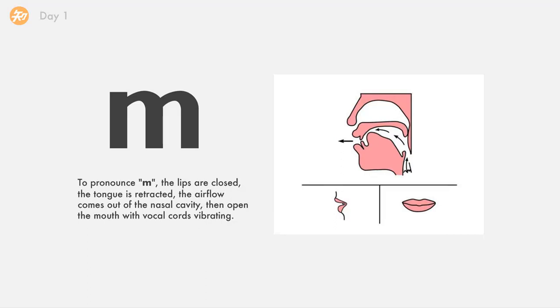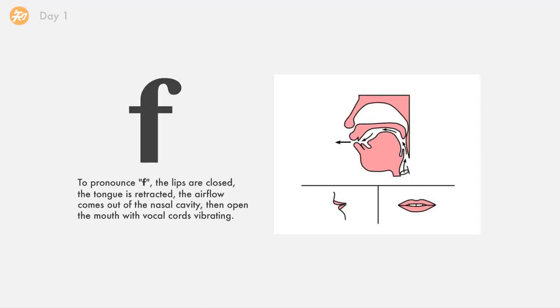The next one is m. To pronounce m, the lips are closed, the tongue is retracted. The airflow comes out from the nasal cavity and then open the mouth with vocal cords vibrating. The next one is f. The lips are closed, the tongue is retracted. The airflow comes out of the nasal cavity then open the mouth with vocal cords vibrating.